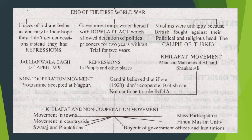Then the government empowered itself with the Rowlatt Act. This was a kind of repression in Punjab and other places. The government was exploiting people. Muslims were also unhappy because the British fought against their political and religious head — the Caliph of Turkey.